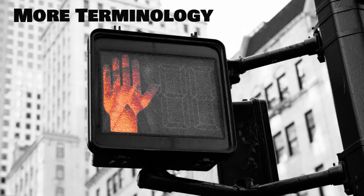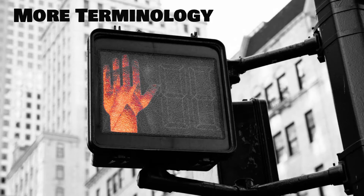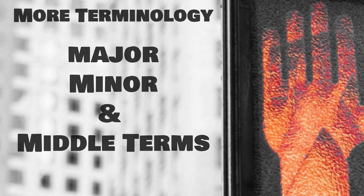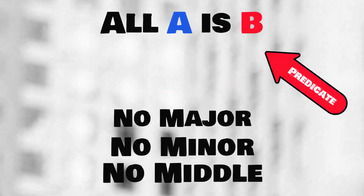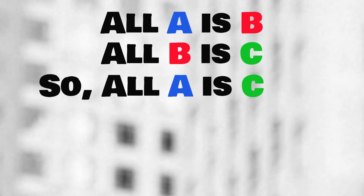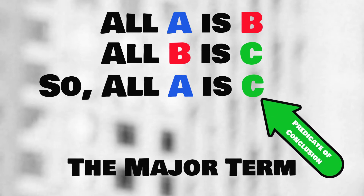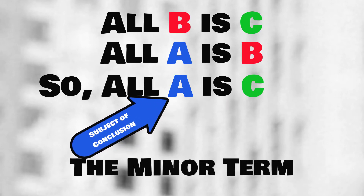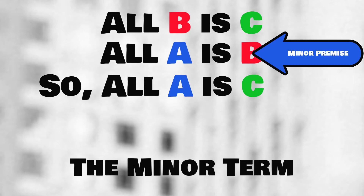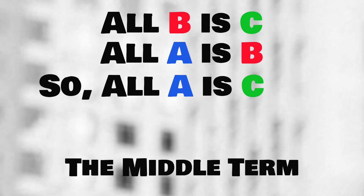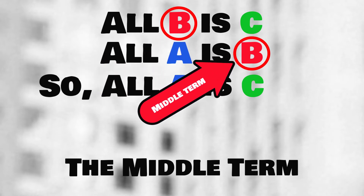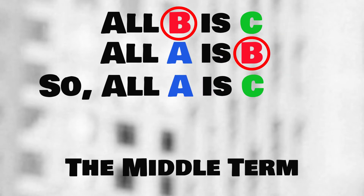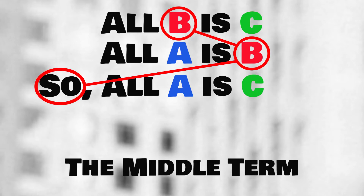A bit more terminology and then we'll be ready to test validity. When looking at a categorical syllogism, we need to know more than the subject and predicate terms of each proposition — these terms have other names depending on their location in the syllogism overall. They're designated the major, minor, and middle terms. The major term is the predicate of the conclusion, and since each term appears twice, the premise containing it is called the major premise. The minor term is the subject of the conclusion and appears in the minor premise. The remaining term is the middle term; it occurs in both premises only, not in the conclusion. It's structurally the most important term because it links the premises and enables inference to a conclusion.